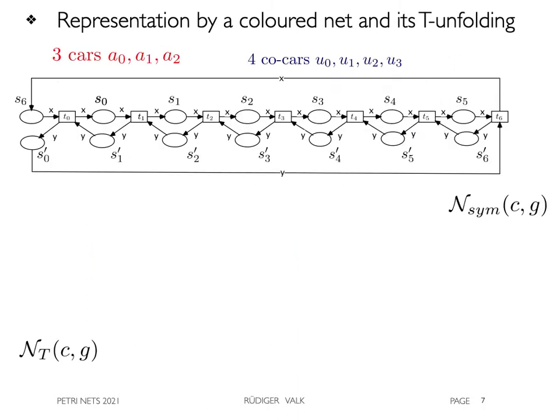In a straightforward way, we represent the circular traffic queue by a colored net called N_subsim of C, N, G, like here in the example with three cars and four co-cars.